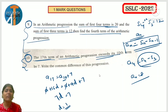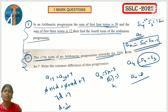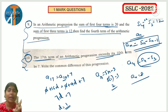Also, if the nth term is given as An equals 5n minus 3, what is the first term? Substitute n equals 1: 5 times 1 minus 3 equals 2. So the first term is 2. Similarly you can find the third term, fourth term. Note these - there are chances they'll be asked.